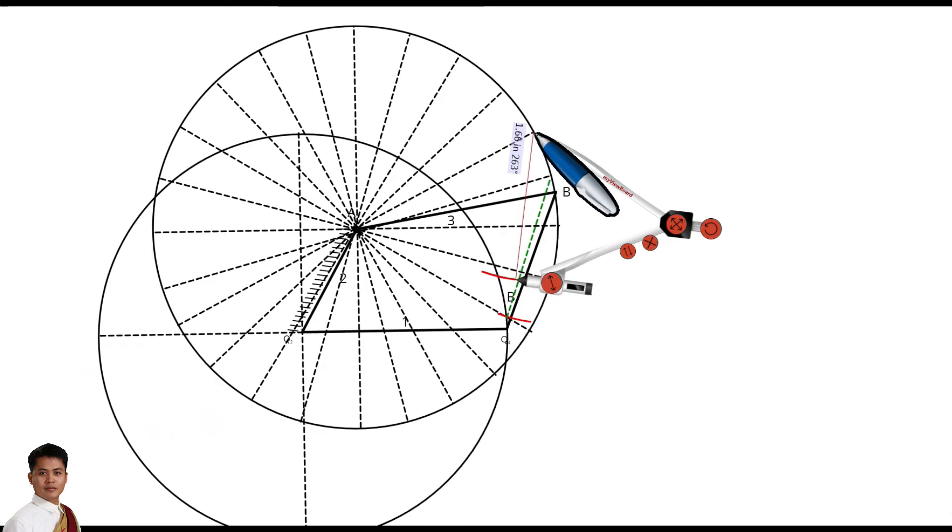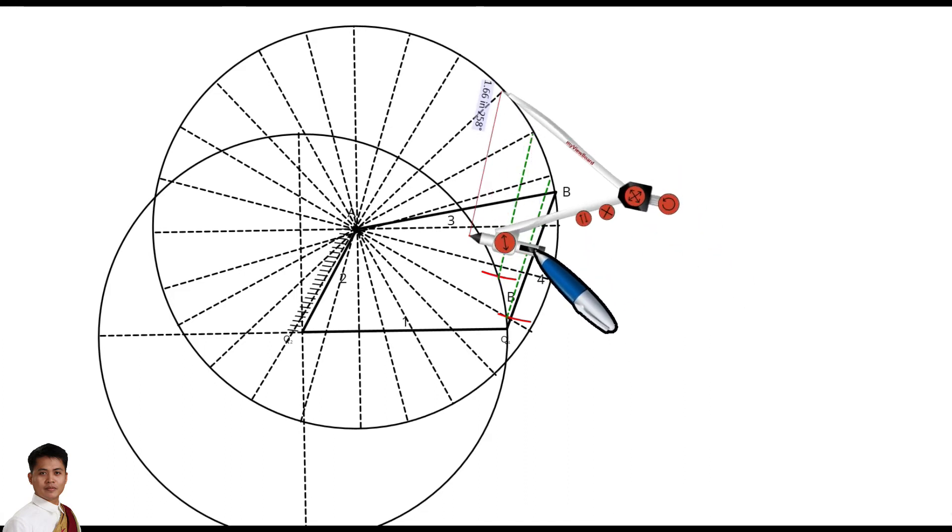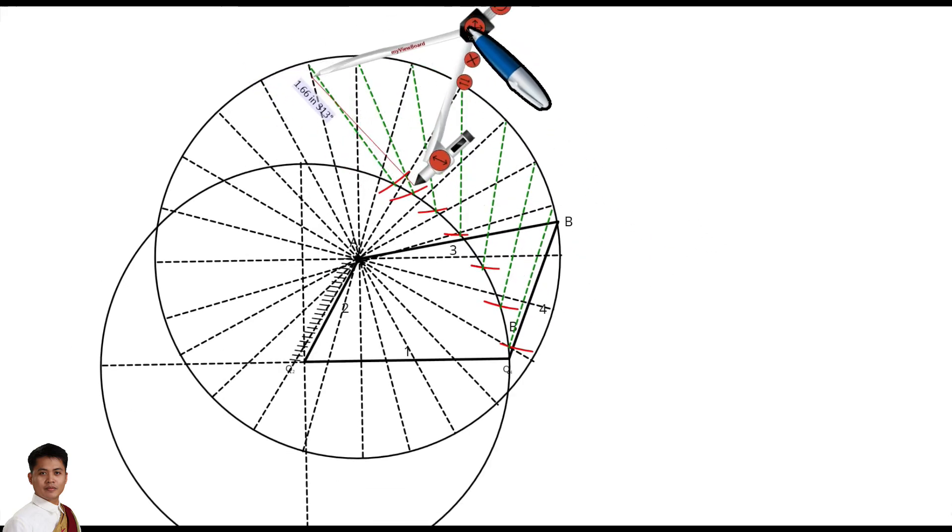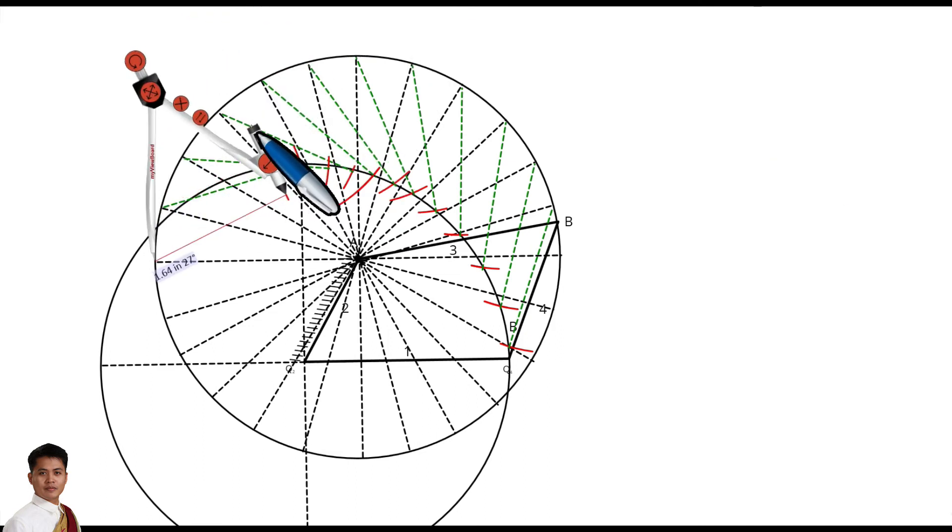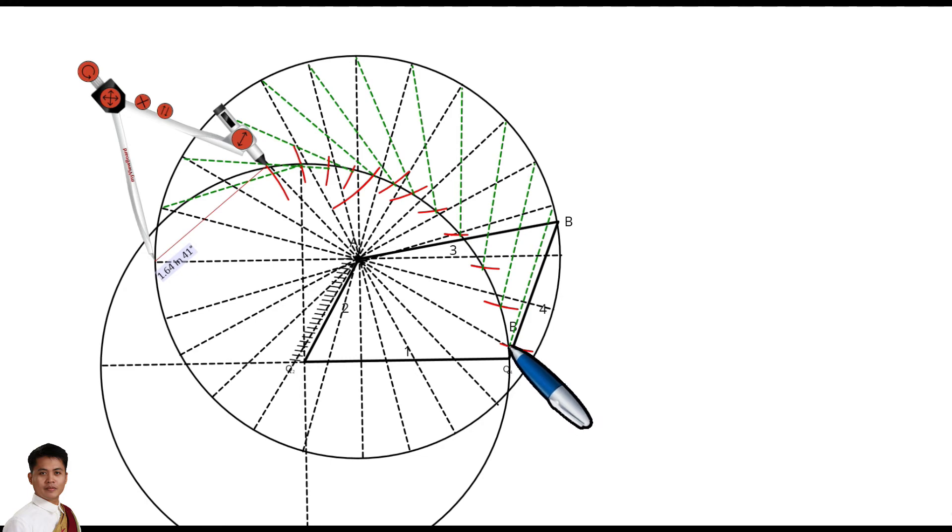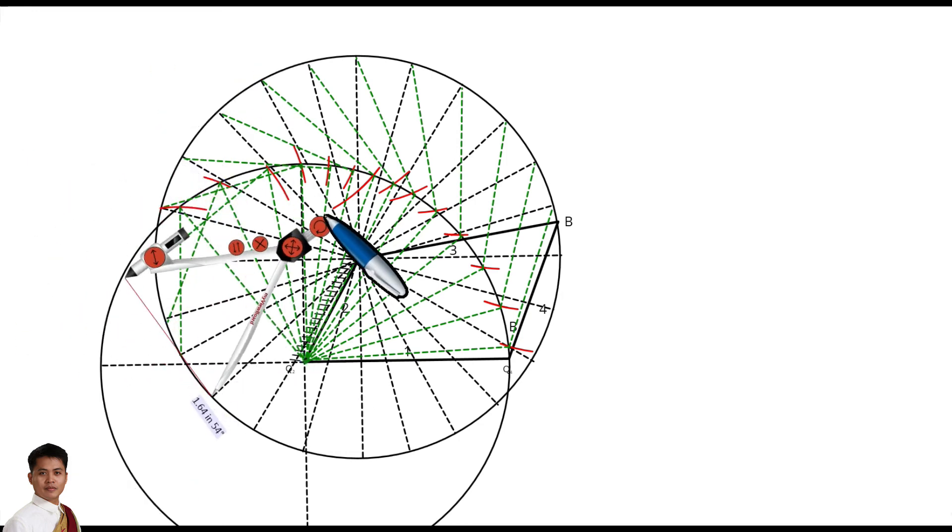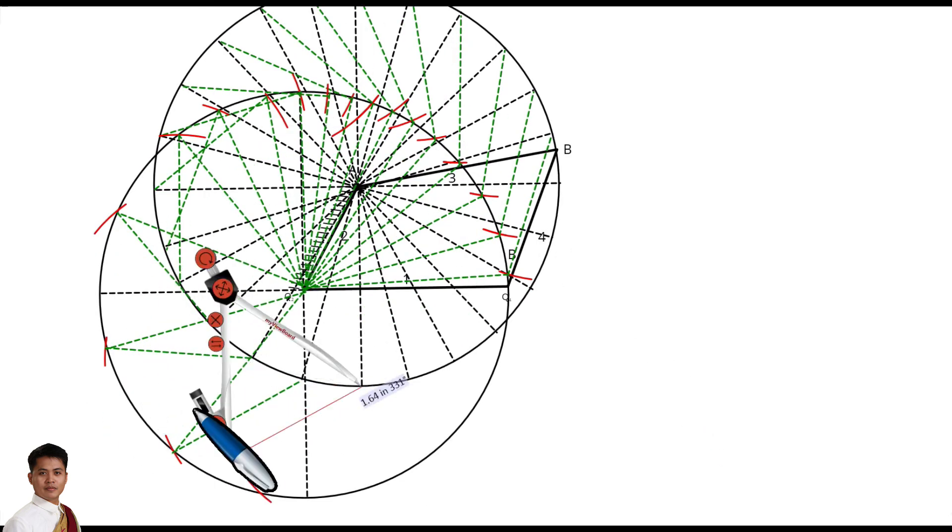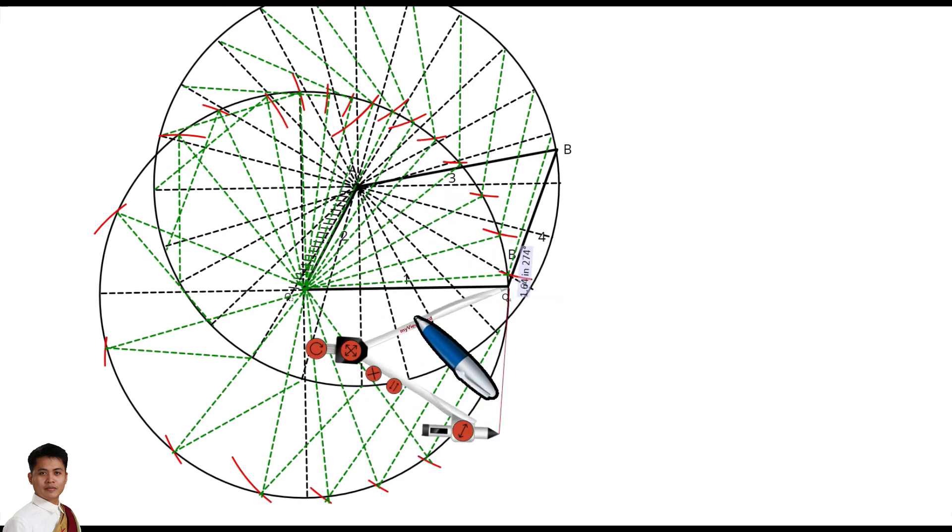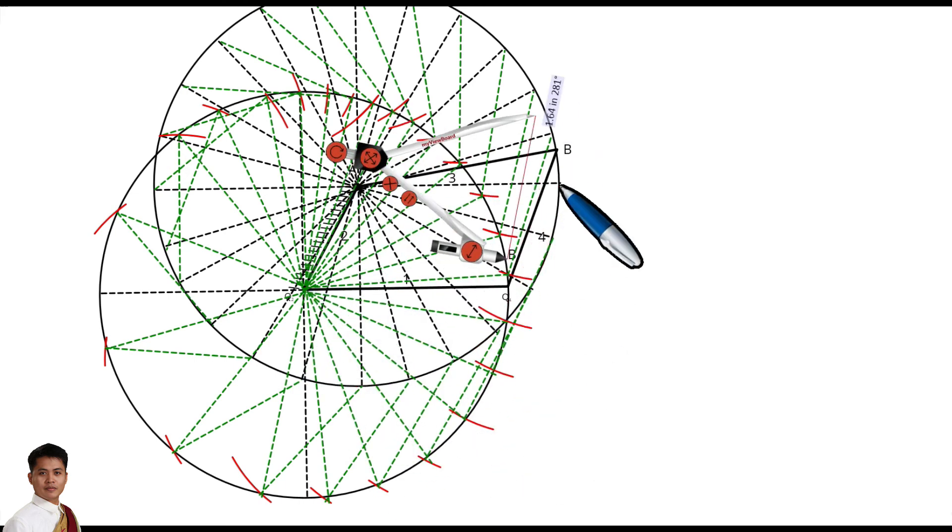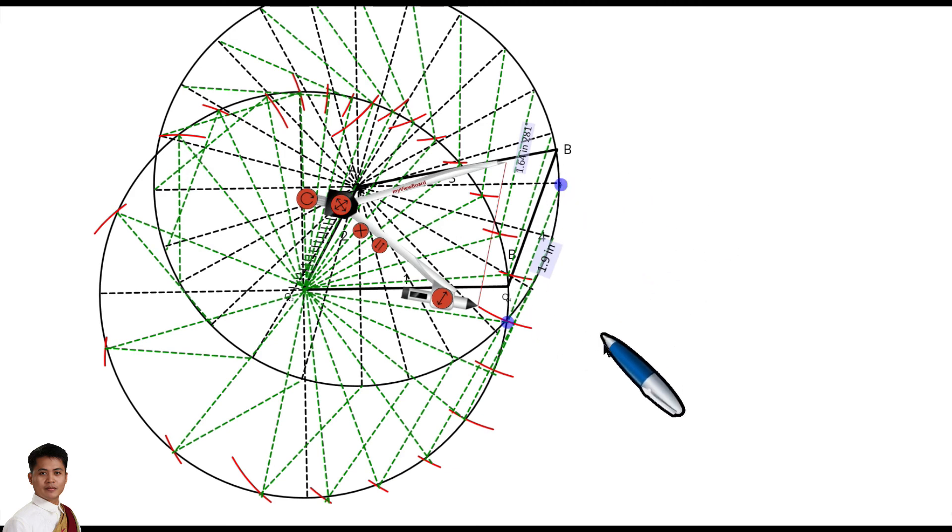Then again, connect that point to the point of intersection of your arc and the path of Q2. So we will do this until we reach this point for point B. I'm just going to connect this point to Q2. So we are done with the path of both B and Q2.